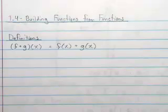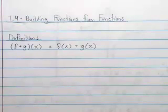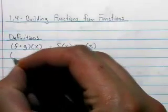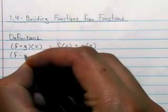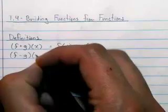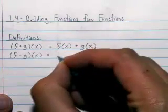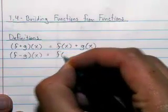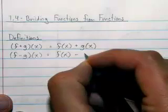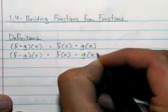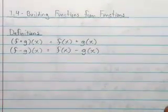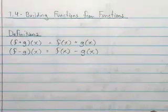Similarly, you can do any other operation. By operation, I mean addition, subtraction, multiplication, division — you can do any of that. Just like you do with numbers, you can do it with functions as well. Each one has its own unique notation. So f minus g of x is what you would expect: it's f of x minus g of x. You take your two functions and subtract what you have.